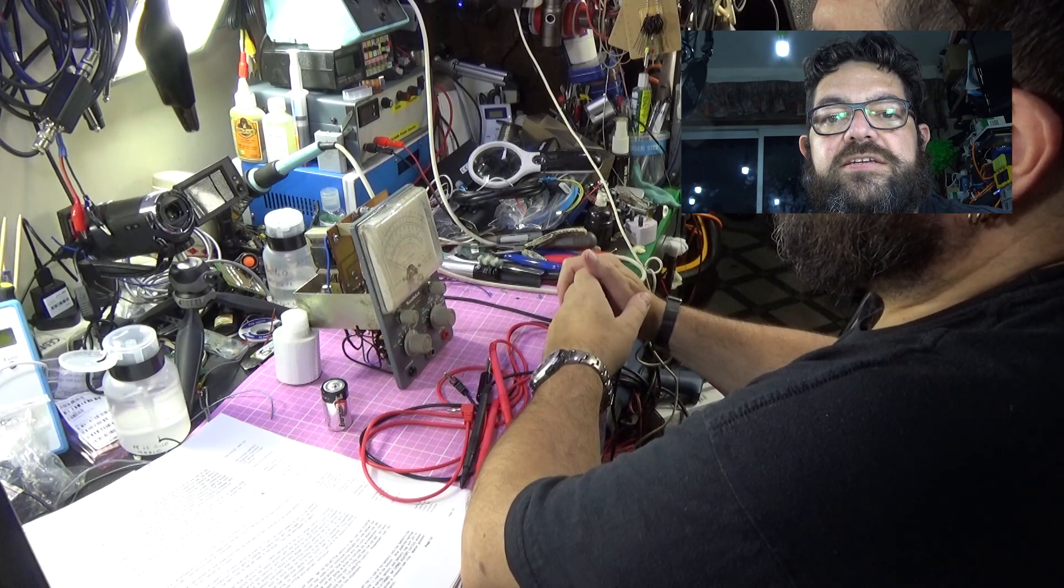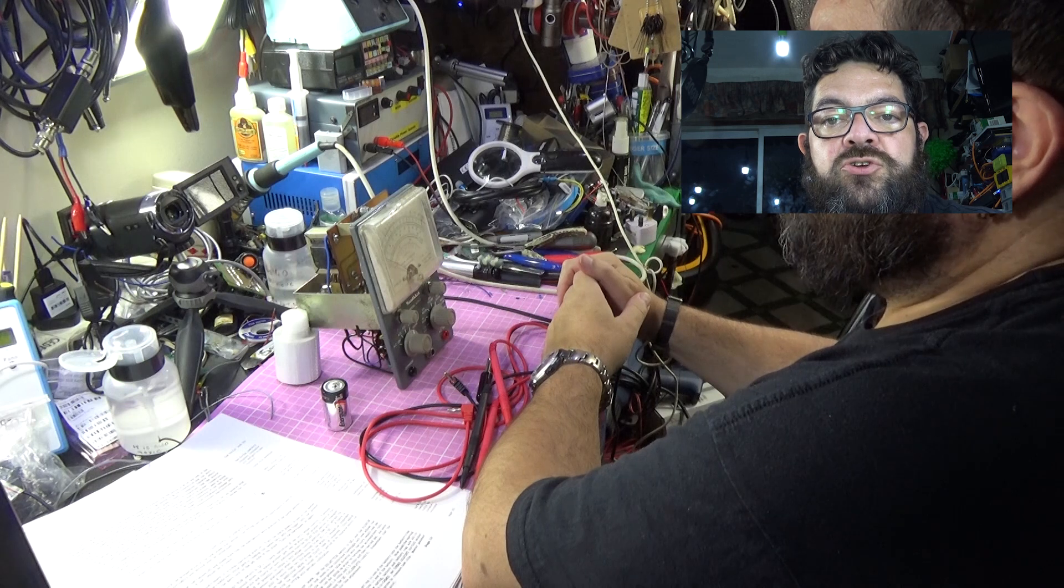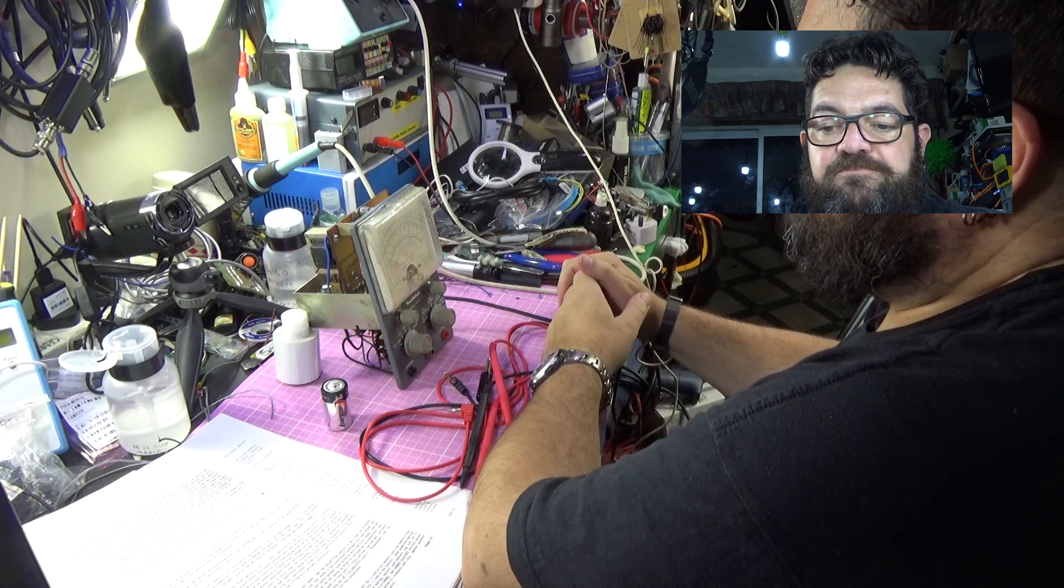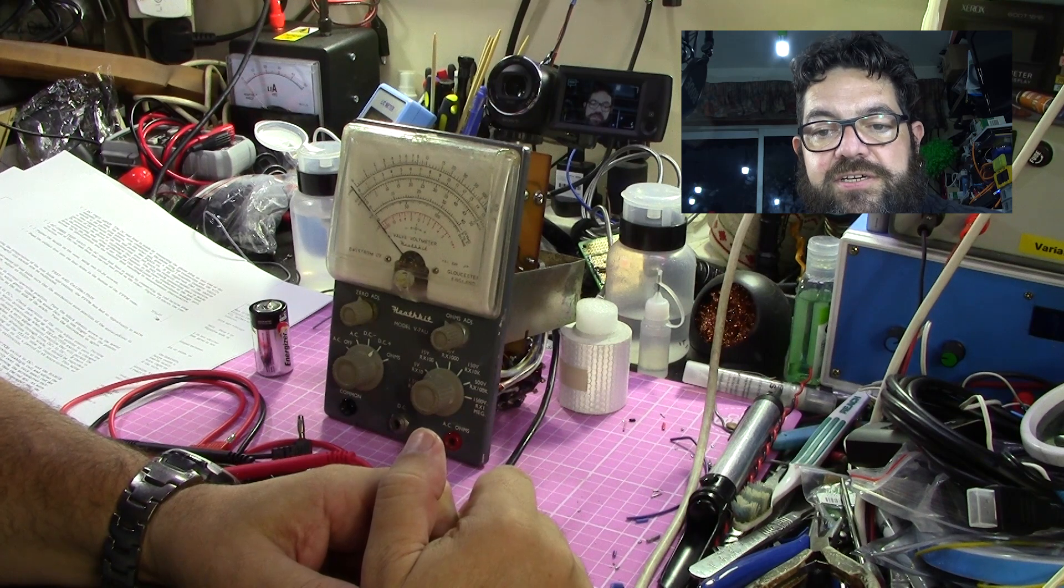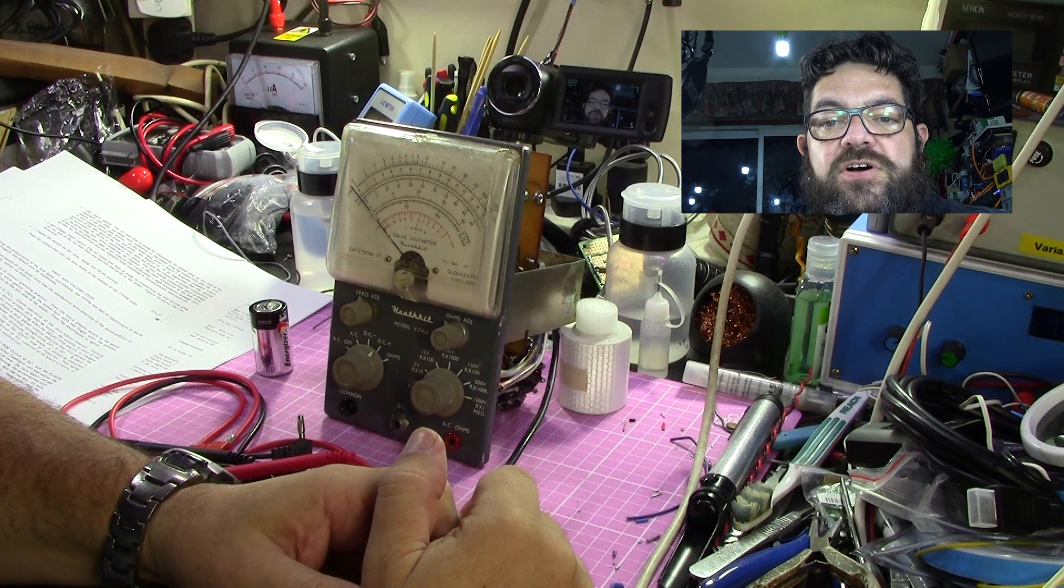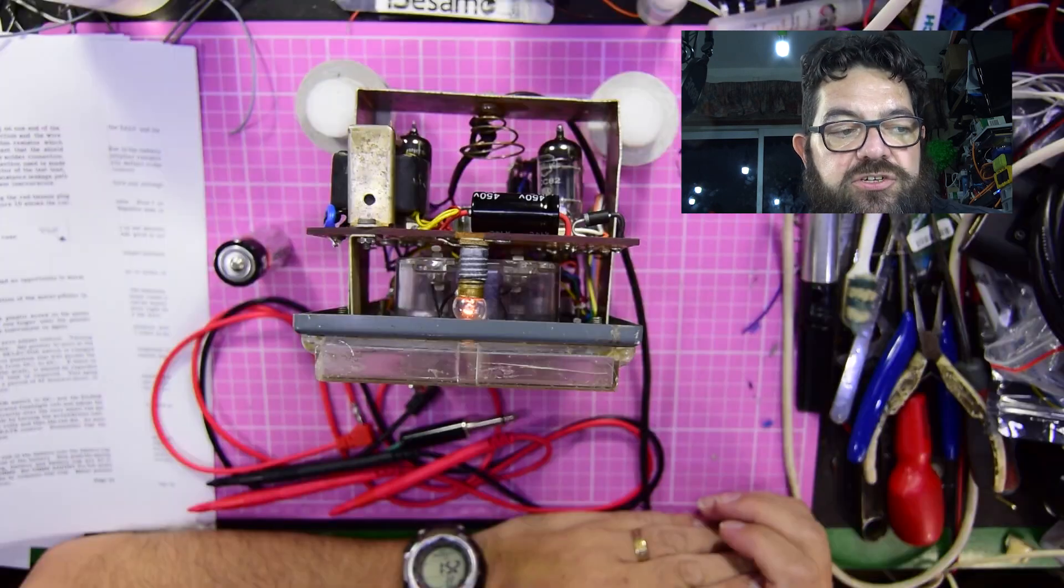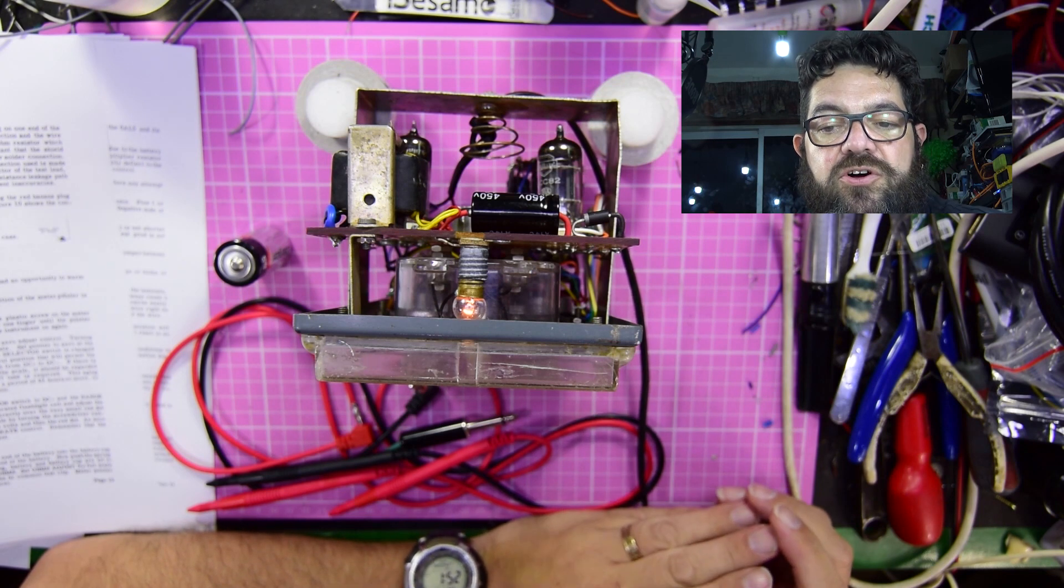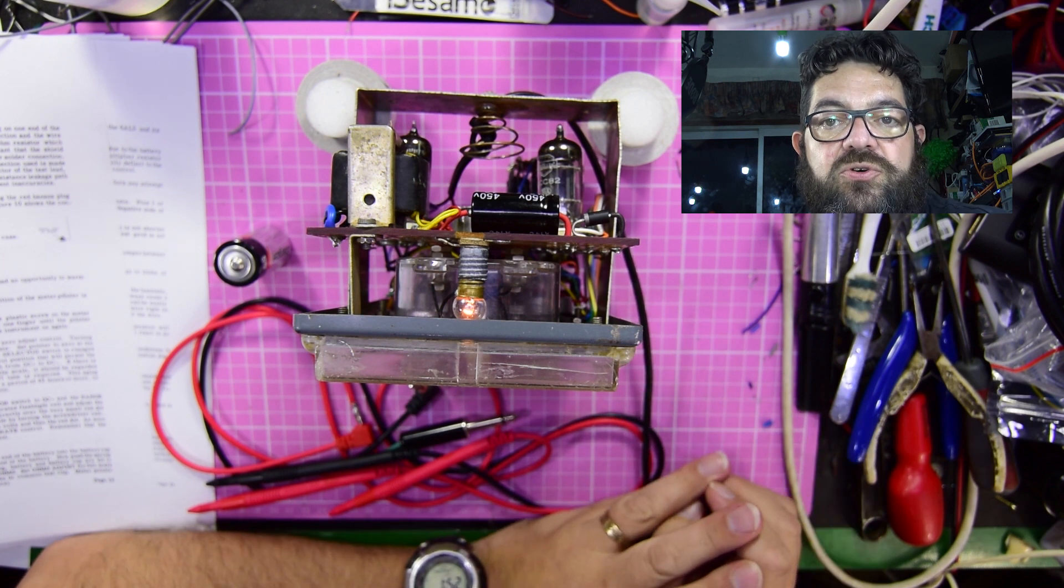Good evening and here we are for hopefully the final part of this vacuum tube voltmeter fix and repair series. Where I left it, I was rebuilding the kit from scratch and following the manual from start to finish, except for the bits I'd already done like rebuild the printed circuit board.